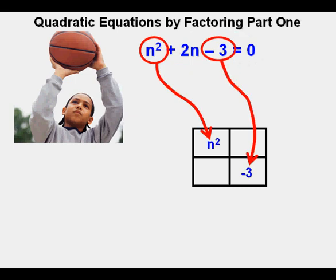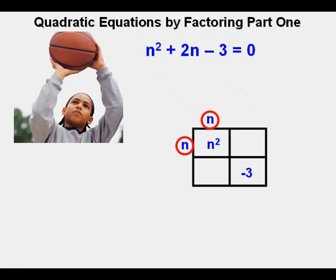Joe's first step is to place the n squared term in the upper left-hand corner of the box, and the numeric term, negative 3, in the lower right-hand corner. Working backwards, we place an n at the top of the first column and at the side of the first row. Now comes the challenging part. We're looking for two numbers that multiply together equal negative 3, and when added together equal the coefficient of n, which is 2.